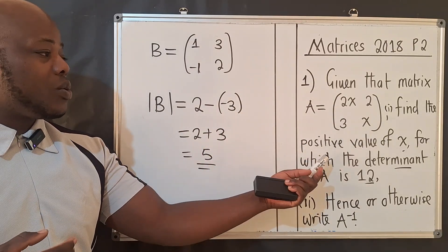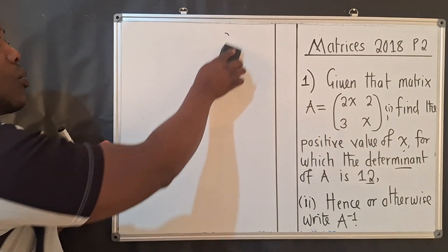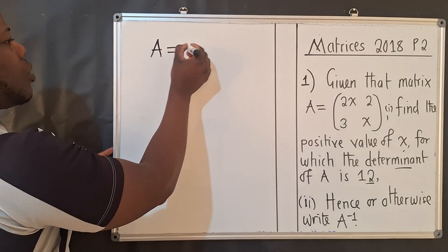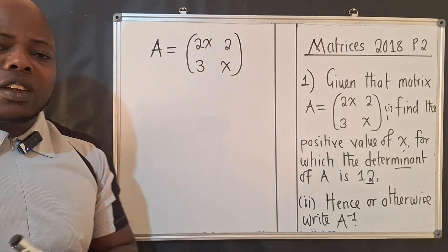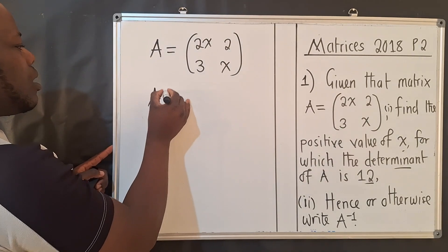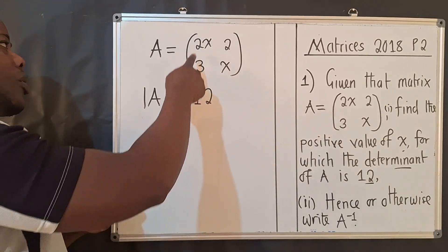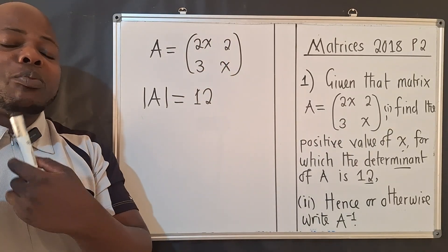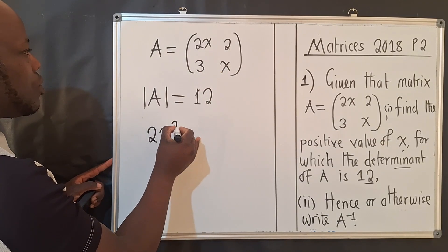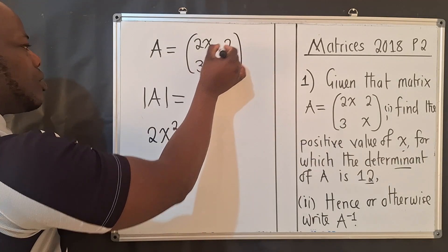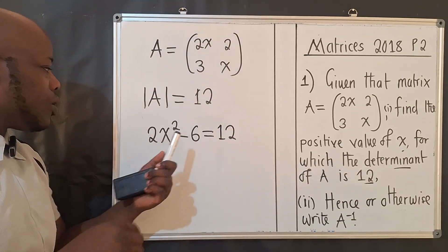Now look at this question. The examiners have given us the determinant already, which is 12. Matrix A is [2x, 2; 3, x], and the determinant of A equals 12. We follow the determinant process: 2x times x gives 2x², and then minus 3 times 2 gives 6, so 2x² minus 6 equals 12.